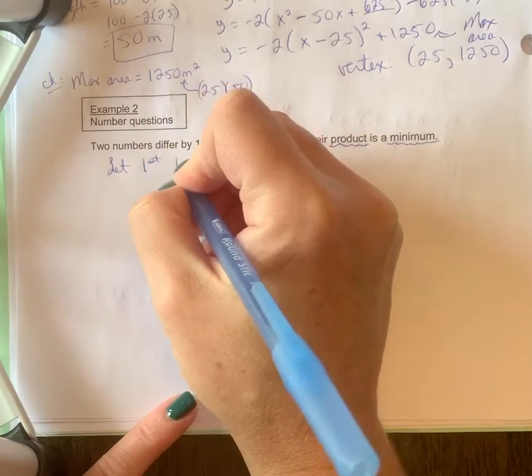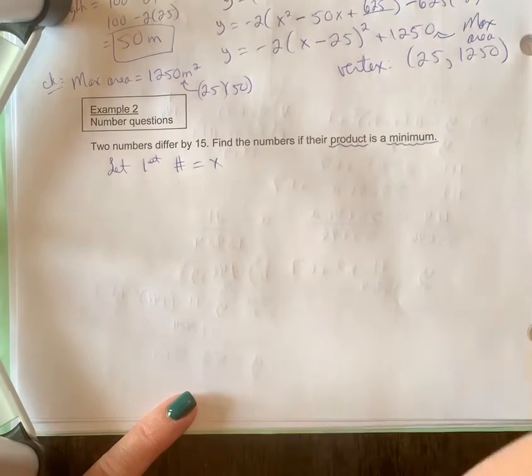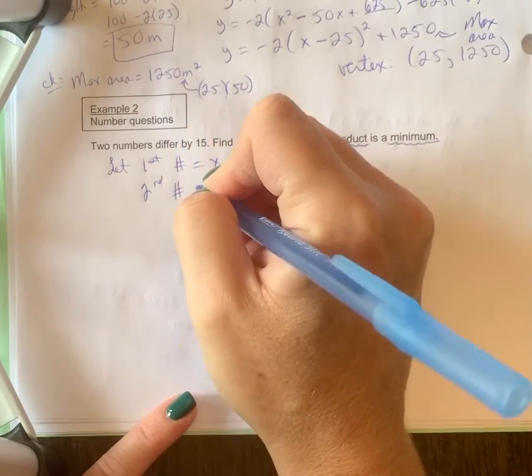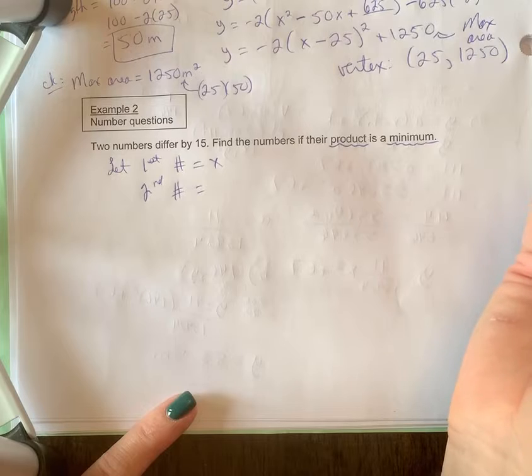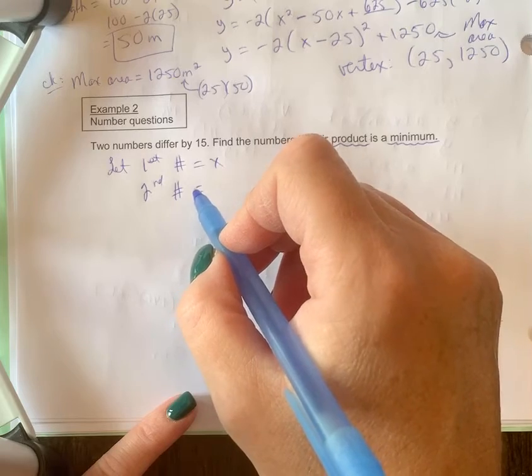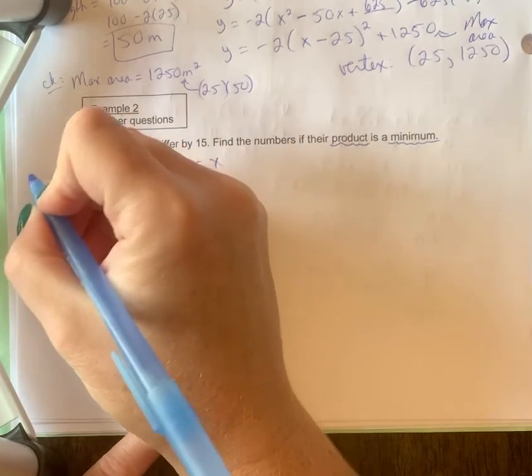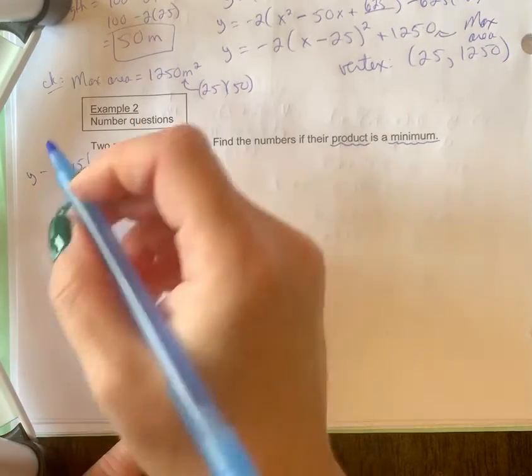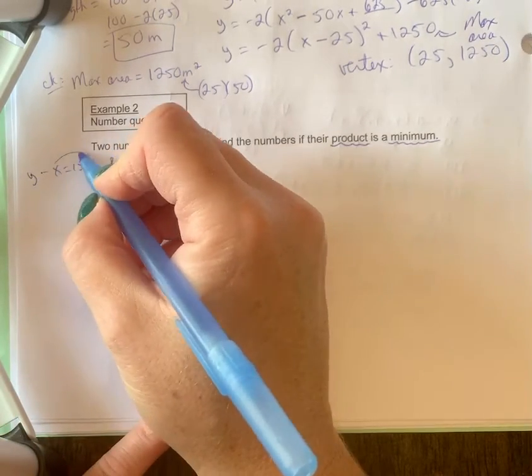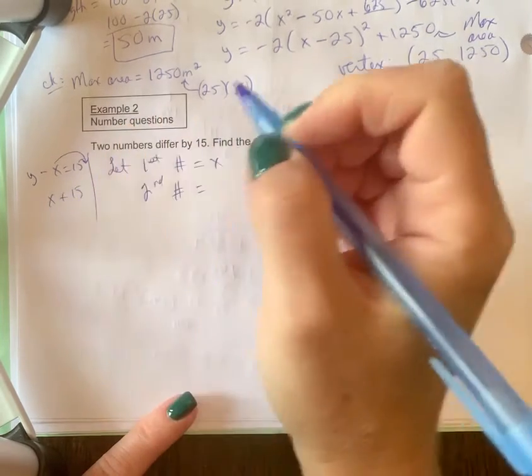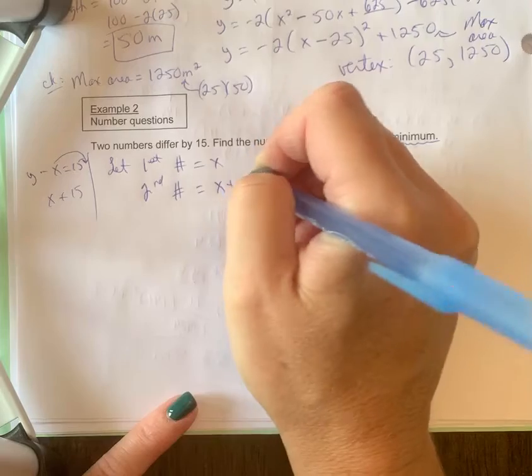We're going to identify some variables. Let the first number equal x, let's keep that simple. The second number differs by x, so we'd say y minus x equals 15. If we wanted to have it in terms of y, it would be x plus 15.